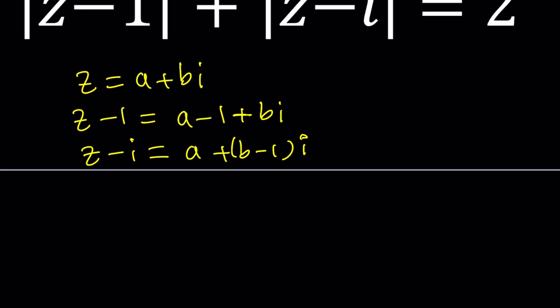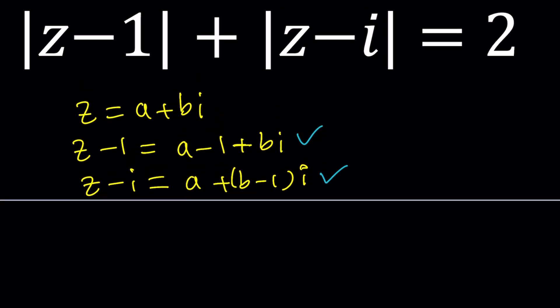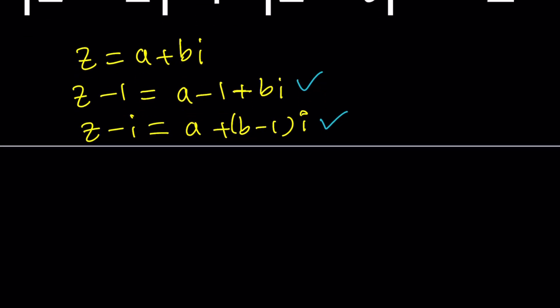So now what we're going to do is we're going to take the absolute value of these two things, and then their sum is supposed to equal 2. Awesome. What is the absolute value of this one right here? It's going to be the square root of A minus 1 squared plus B squared. That's the first absolute value. The second absolute value, I'm looking at these two things, is going to be the square root of A squared plus B minus 1 squared. And the sum is supposed to equal 2.